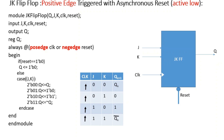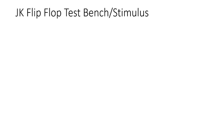We have learned how to write down the design module. Once we have written the design module we have to test it to verify it is working correctly, and for that we have to write down the test bench or stimulus. Let us move ahead and see how we can write down the test bench for the JK flip-flop.